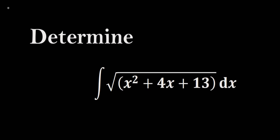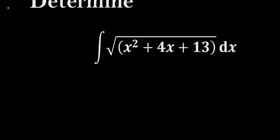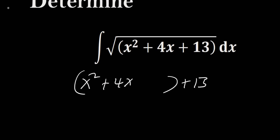To solve this question, we are going to complete the square for the content of the roots. This will be x squared plus 4x — leave a gap, create a parenthesis — plus 13. Now divide 4 by 2, that gives us 2, so add plus 2 squared here and subtract 2 squared from here.